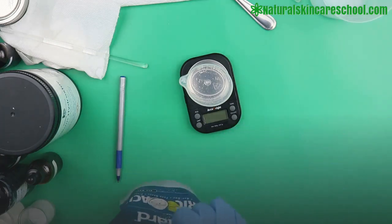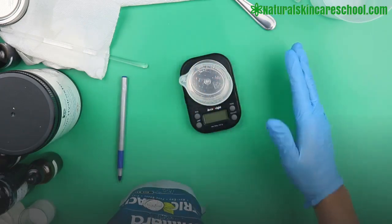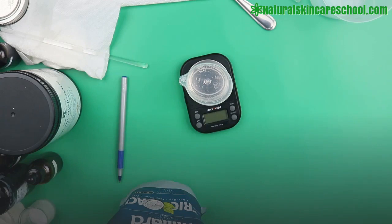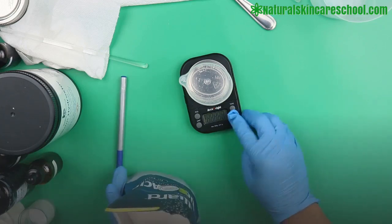So first thing you want to do is to weigh the acid then weigh the water. Then you're going to add the acid to water, not the other way. You're going to add the acid slowly to the water, not the other way. So be careful when you are doing this. So let's measure our citric acid.